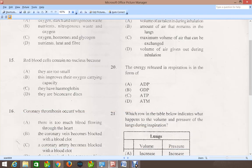Question 20: The energy released in respiration is in the form of, and that is ATP, which is C.